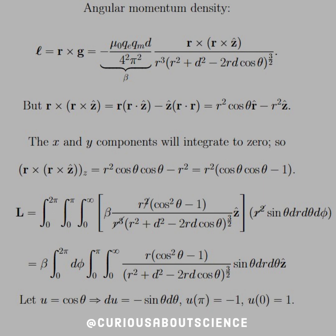But as you remember, R cross R cross Z is equal to R times R dot Z hat minus Z hat R dot R. So we're left with R squared cosine theta due to the R component having X, Y, and Z component breakdown again. And R dot R is 1, so we're good there. X and Y components will integrate to 0, so we're left with R cross R cross Z, the Z component only, which gives us R squared cosine theta cosine theta from the R hat minus R squared. And so we factor out an R squared, and we get cosine squared minus 1. Push that all into the integral, where we made the substitution for beta. We're going from 0 to 2 pi, 0 to pi, and then 0 to R in our spherical coordinate system.